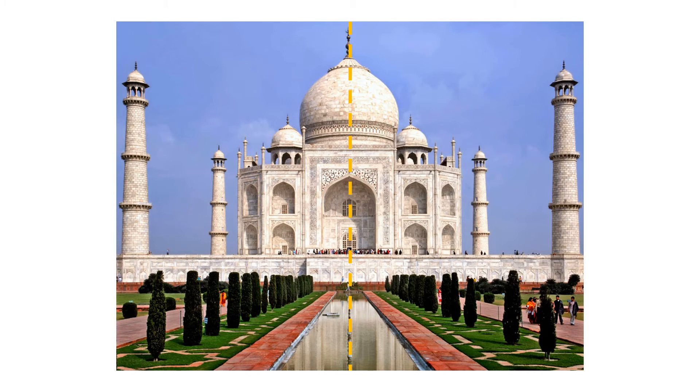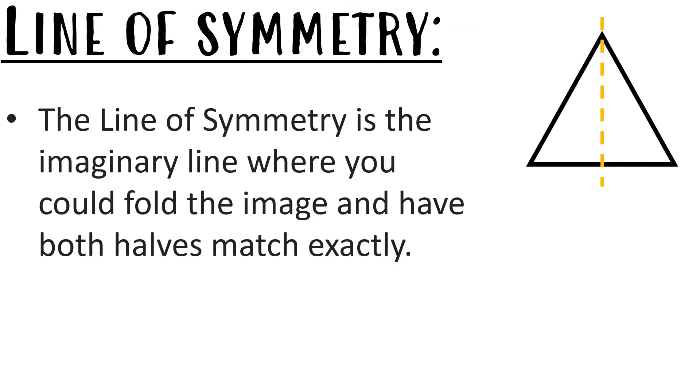Here we have a picture. This picture is symmetrical. Line of symmetry. The line of symmetry is the imaginary line where you could fold the image and have both halves match exactly.